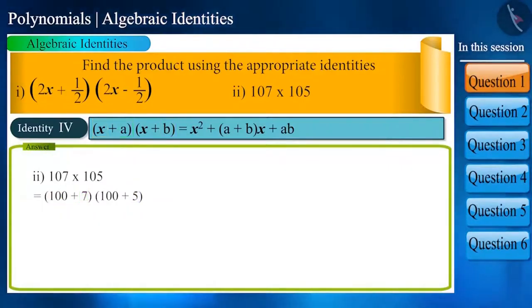So 107 multiplied by 105 would be 100 square plus (7 + 5) multiplied by 100 plus 7 multiplied by 5, which becomes 10,000 plus 1,200 plus 35, that is in total 11,235.